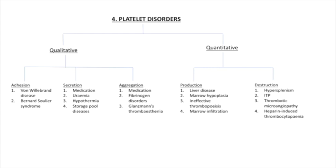Looking at the two arms of our algorithm: on the left we have qualitative platelet disorders, and on the right quantitative platelet disorders. This is a nice conceptual way to break it down. Qualitative platelet disorders can occur as a result of impaired platelet adhesion, impaired platelet secretion, or impaired platelet aggregation.